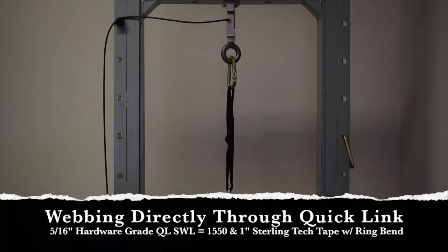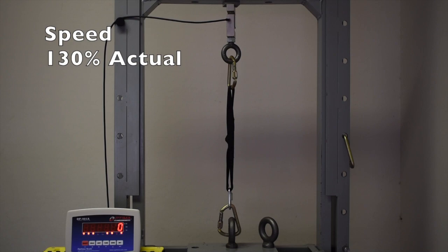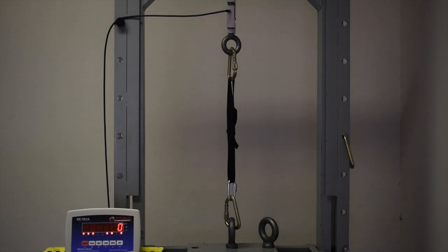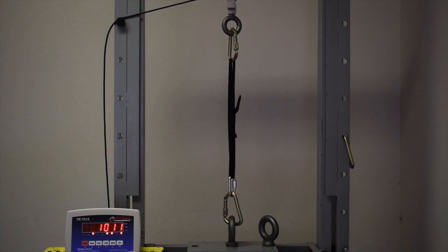Alright, this next test, we've got webbing rigged through a steel carabiner at the top, a 5/16th hardware store grade rapide at the bottom, and we're going to see if there's any major difference between that and directly through a hanger. Here we go.